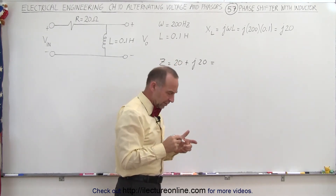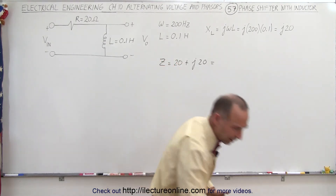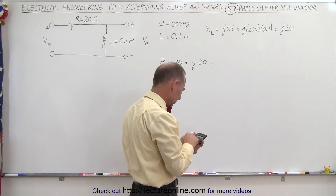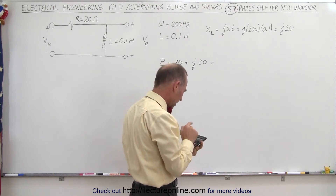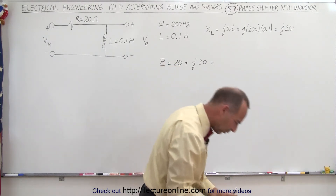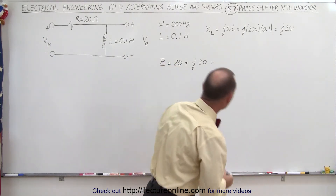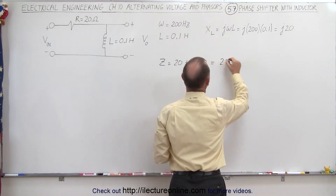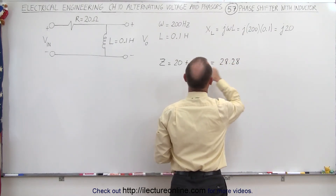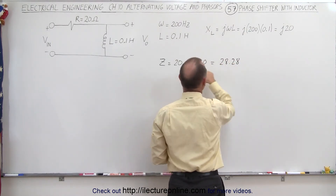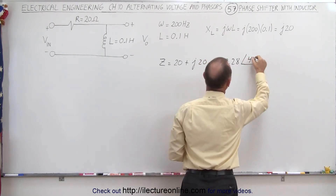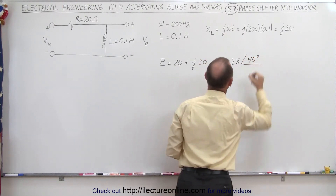So this is equal to — I'm going to need a calculator for that — that's 800, take the square root of that, which would be 28.28. So 28.28 is the magnitude of these combined, with an angle of 45 degrees.